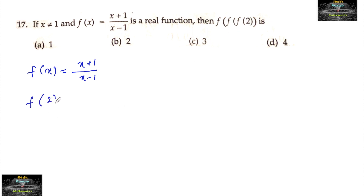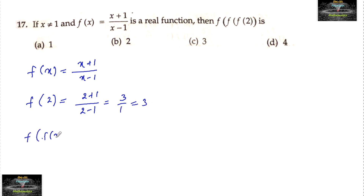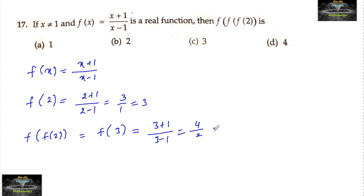First of all, f of 2 is equal to (2 + 1) / (2 − 1), that is 3 upon 1, which is 3. Then f of f of 2, which is f of 3, equals (3 + 1) upon (3 − 1), that is 4 by 2, which equals 2.